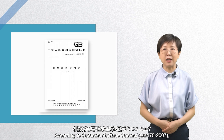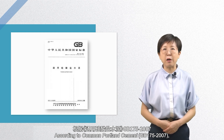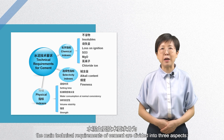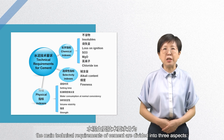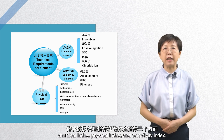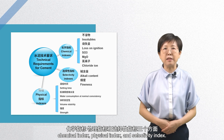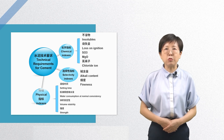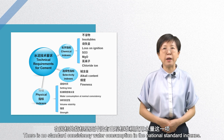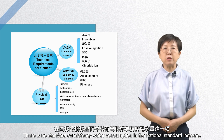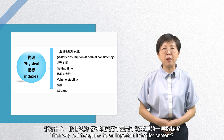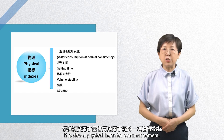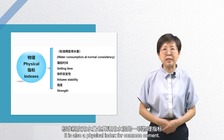According to Common Portland Cement GB 175-2007, the main technical requirements of cement are divided into three aspects: chemical index, physical index, and selectivity index. There is no standard consistency water consumption in the national standard indexes. Then why is it thought to be an important index for cement? It is also a physical index for common cement.